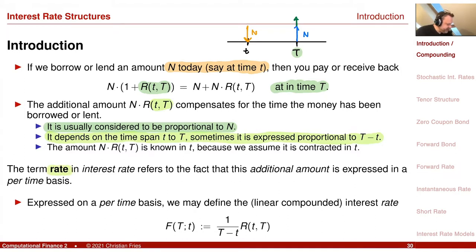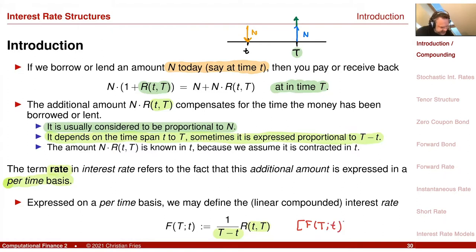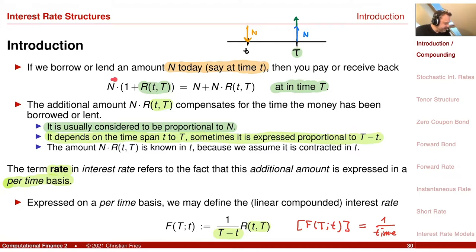A rate expresses this amount on a per-time basis, so I divide by time. Thinking about physical units like in physics: the unit of interest rate is one divided by time — not currency per time — because the currency is already in N, the amount lent. So the unit of the interest rate is 1/time, and this is our definition of the interest rate.